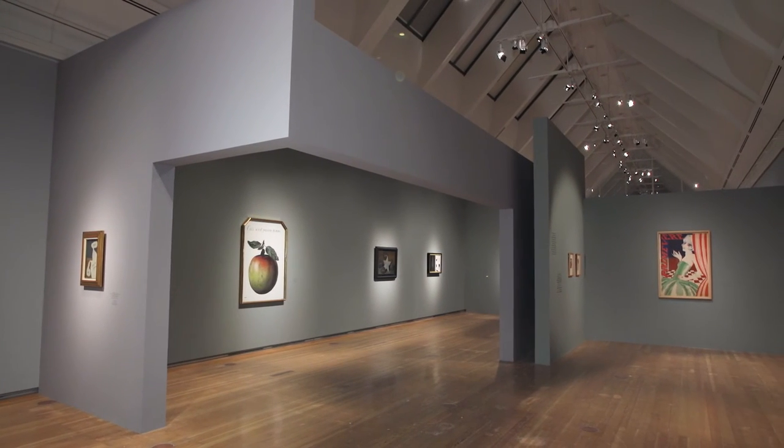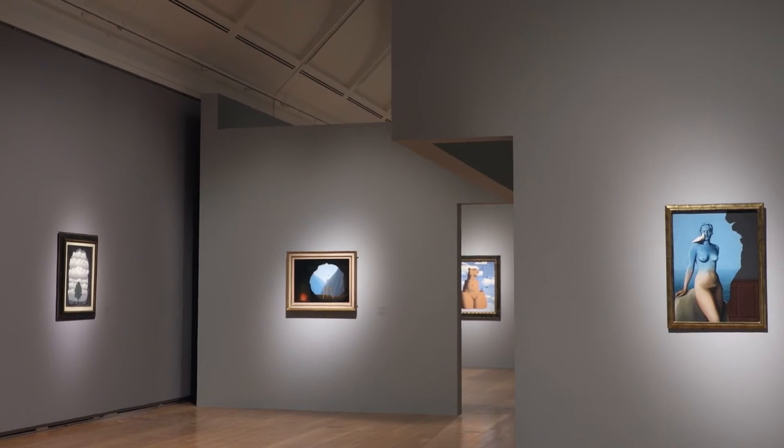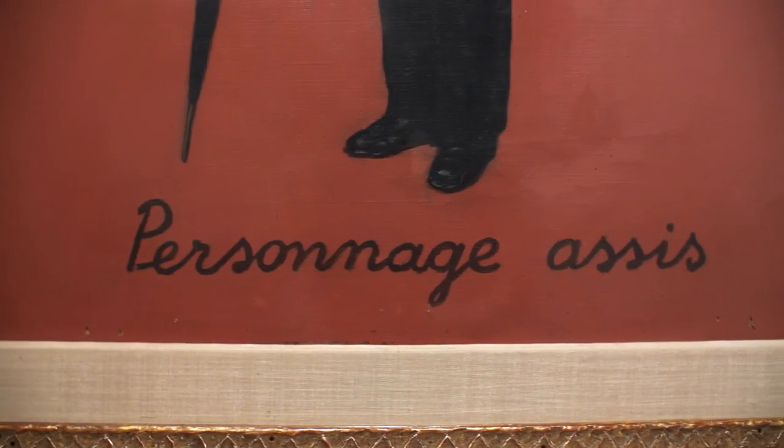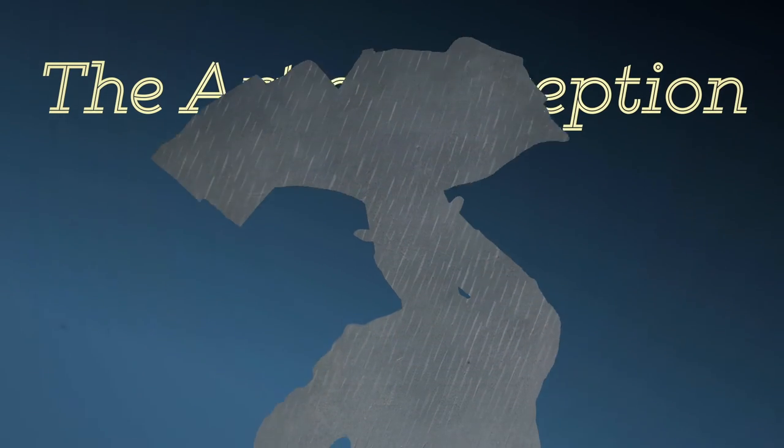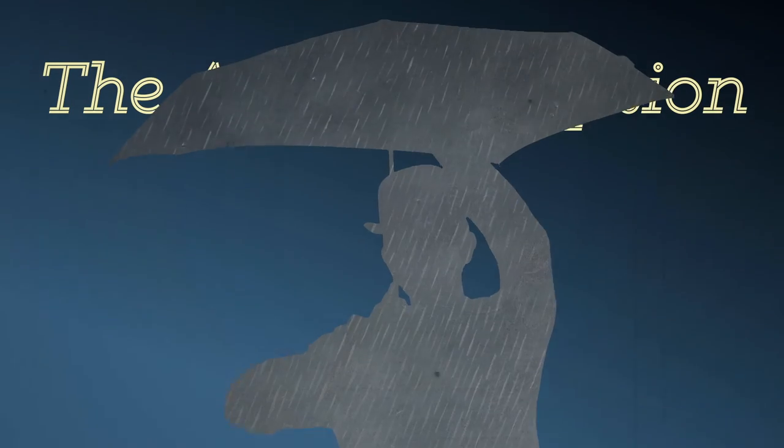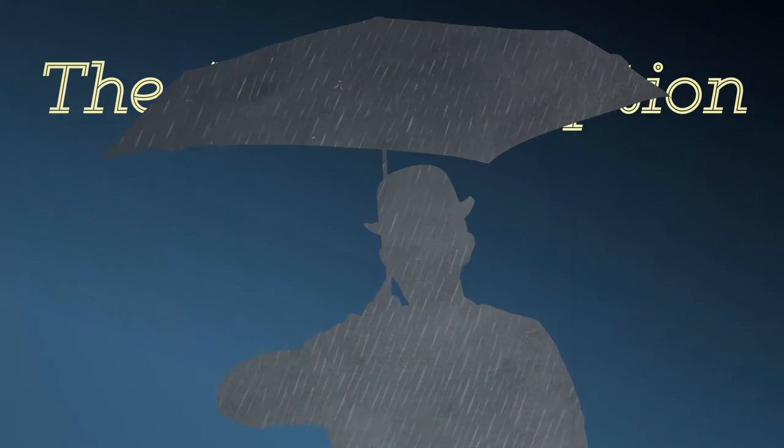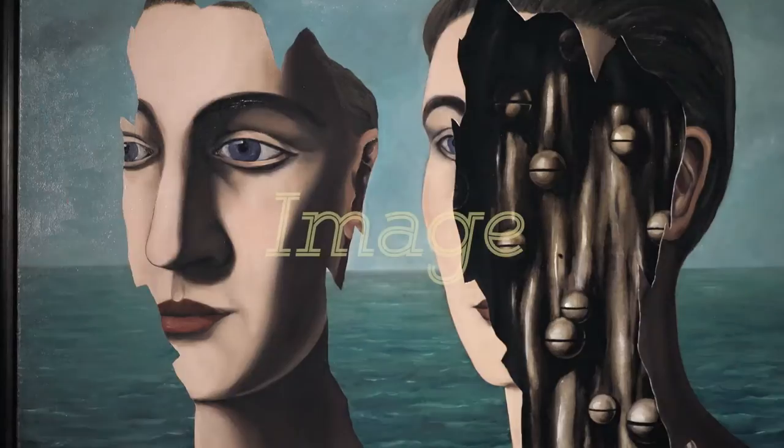The deceptive nature of images. That is what the surrealist Magritte presents to us. Why deceptive? Well, if it is impossible for people to know reality, how are they to create images of it?